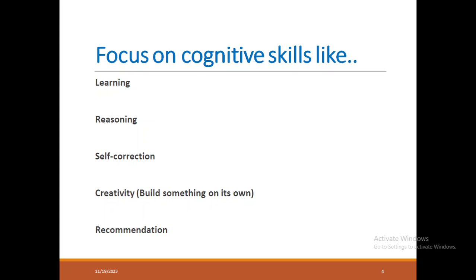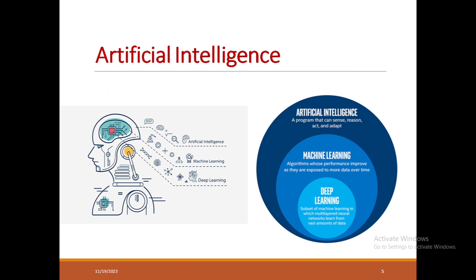Nowadays we have generative AI applications such as ChatGPT, BARD, DebugAI, and GammaAI. All these generative AI applications are the biggest contribution of AI models, and they are built on top of huge training data that has happened in the past. The last expectation from AI is a recommendation system.